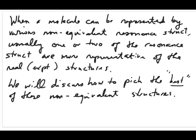When you have non-equivalent resonance structures, getting the real structure is not as simple as taking an average of all of them. It turns out that usually one or two of the resonance structures are more representative of the experimental structure than others. So in this video, we would discuss how to pick our best structure using a set of rules based on formal charges.